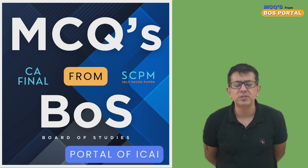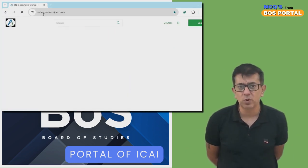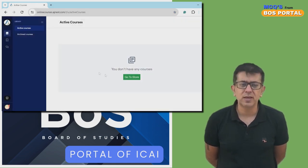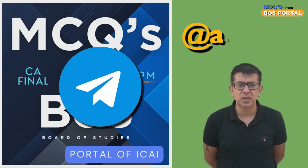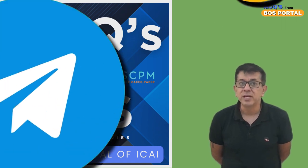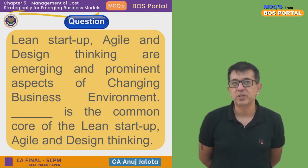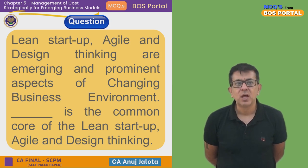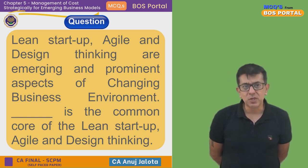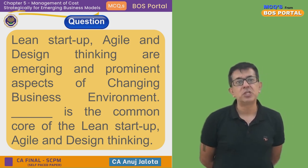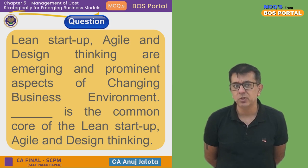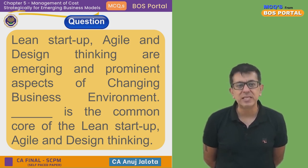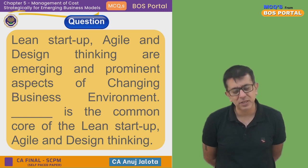For today's question, if you wish to enroll for my complete course, see the link below in the description and join my Telegram channel. Now, the question: lean startup, agile, and design thinking are emerging and prominent aspects of the changing business environment. What is the common core of all three?